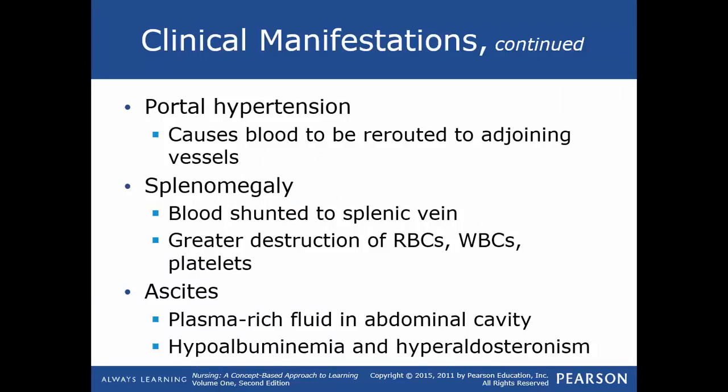Portal hypertension causes blood to be rerouted to adjoining collateral vessels. The affected veins become engorged and congested, occurring in the esophagus, rectum, and abdomen. Splenomegaly also develops because portal hypertension shunts blood into the spleen via the splenic vein, enlarging the spleen itself.